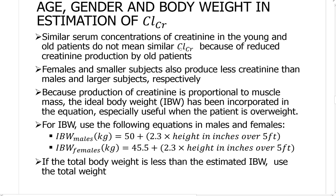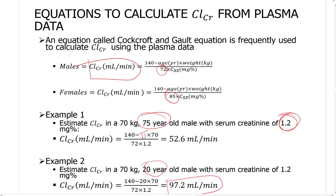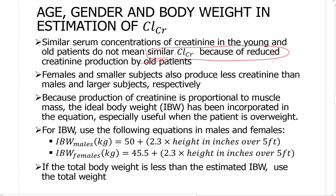Females and smaller subjects produce less creatinine than males and larger subjects, because creatinine production is proportional to muscle mass. For this reason, an ideal body weight (IBW) correction is used. For males: IBW (kg) equals 50 plus 2.3 times the number of inches over 5 feet. If total body weight is less than the estimated IBW, use the actual total body weight in the creatinine clearance calculation.